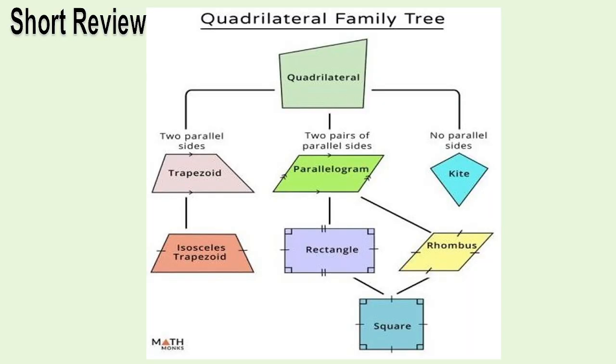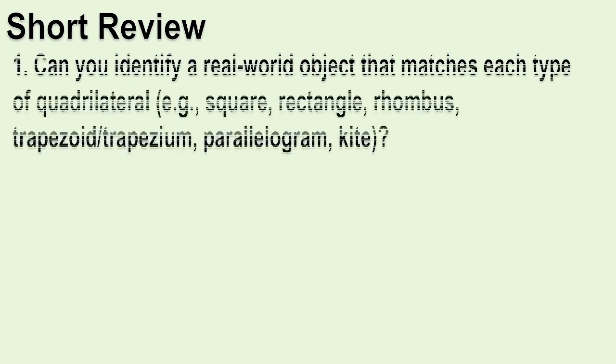Day 1. Short Review. I have here the quadrilateral family tree. Can you identify a real world object that matches each type of quadrilateral? For example: Square, Rectangle, Rhombus, Trapezoid or Trapezium, Parallelogram, Kite.